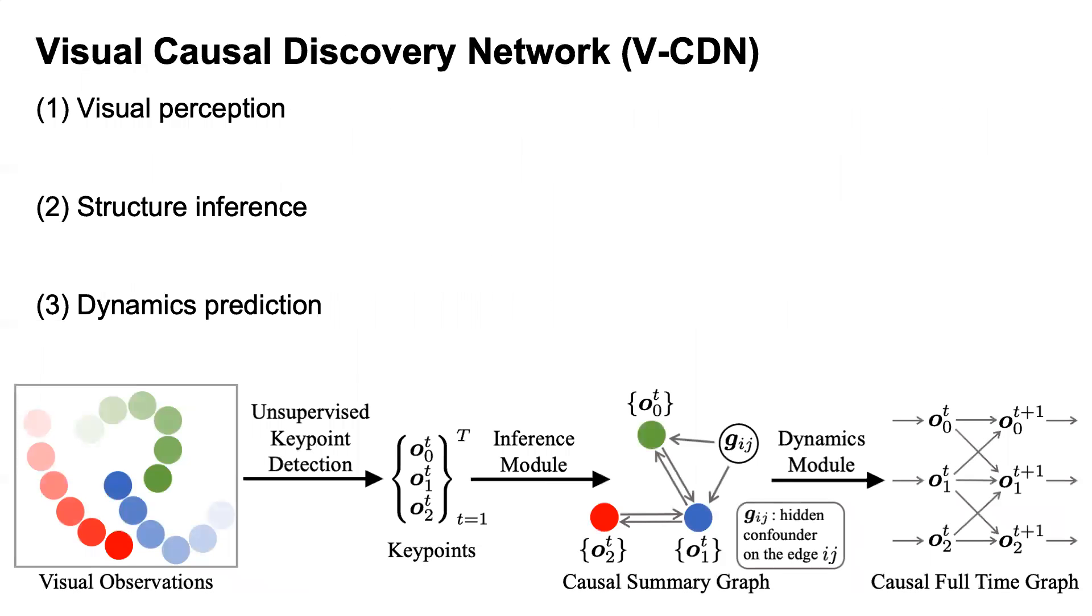Our model, namely visual causal discovery network, consists of three modules for visual perception, structural inference, and dynamics prediction.